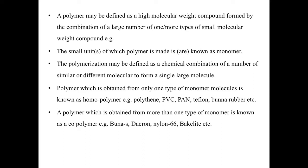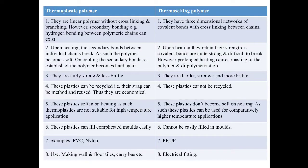Thermoplastics and thermosetting polymers differ structurally. Thermoplastics have cross-linking or branching, whereas thermosetting polymers have three-dimensional networks with covalent bonds or cross-linking between the chains. Upon heating, secondary bonds between the individual chains break in thermoplastics, while thermosetting polymers are fairly strong — they are harder, stronger, and more brittle.